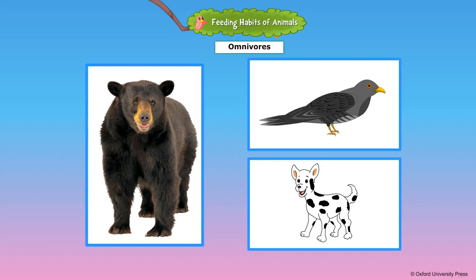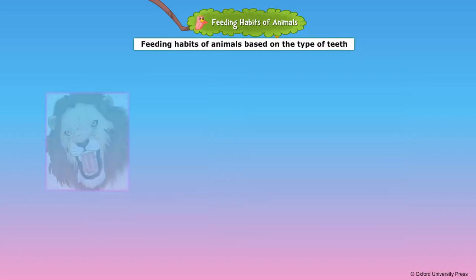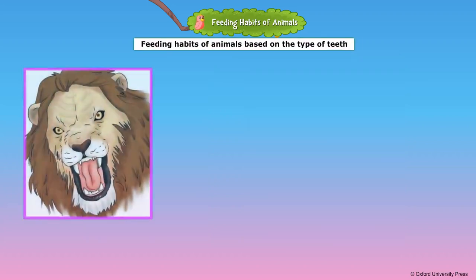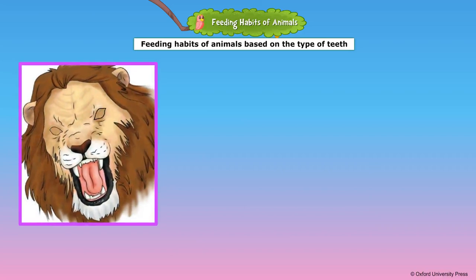Animals that eat both plants and the flesh of animals are omnivores. Some omnivorous animals are bear, crow, and dog. Animals have different kinds of teeth to eat different kinds of food.